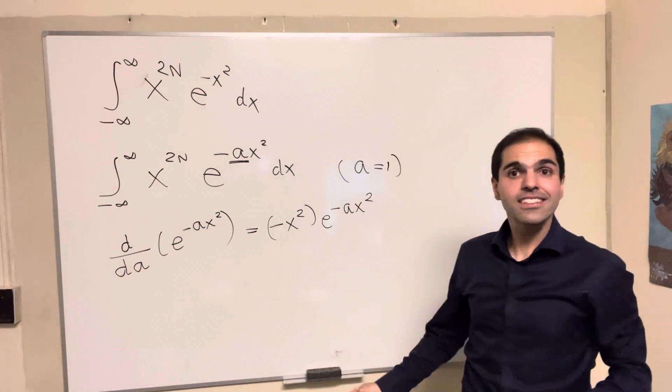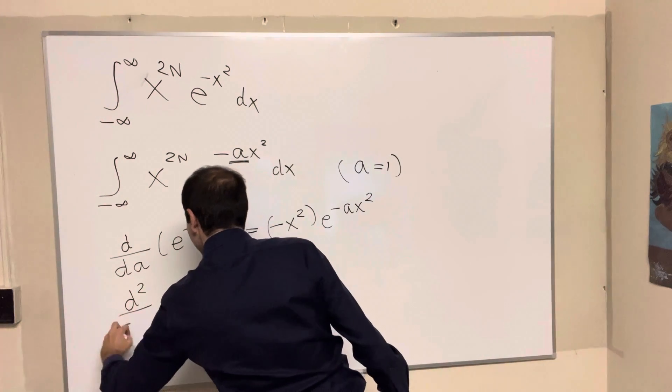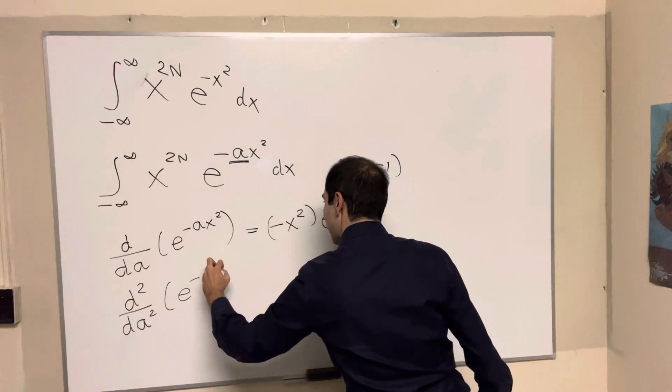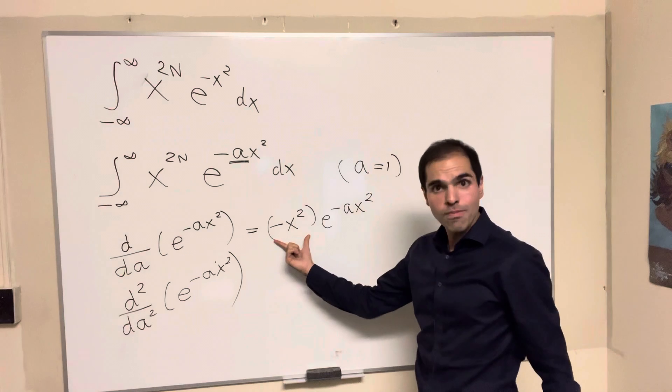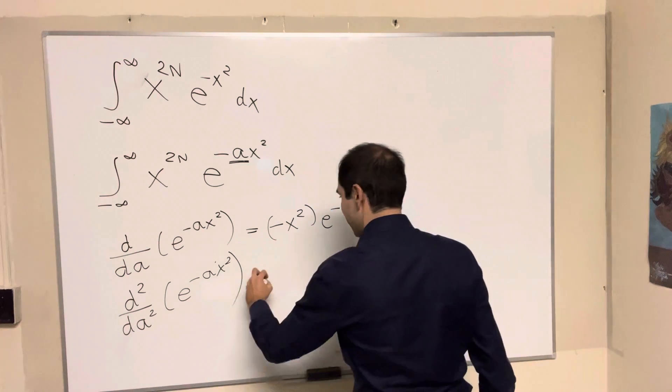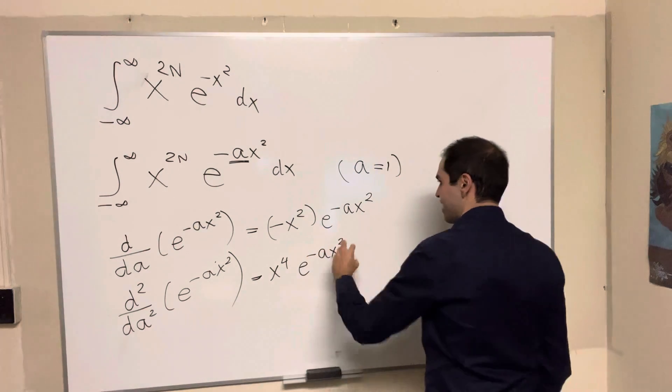And since this was a lot of fun, let's do it again. So let's take the second derivative of this, e of minus a x squared. Well, then we have a minus x squared and another minus x squared that comes out. So x to the fourth, e of minus a x squared.